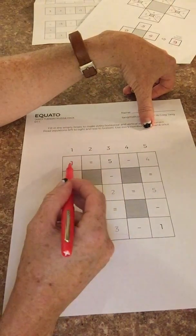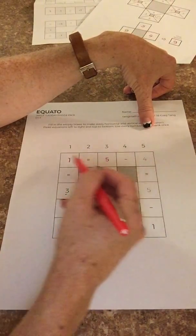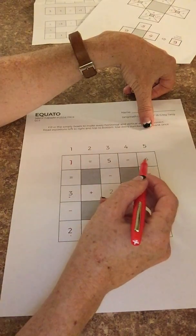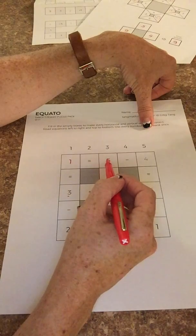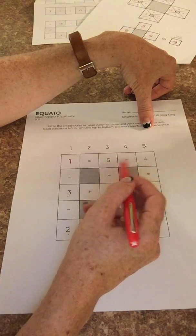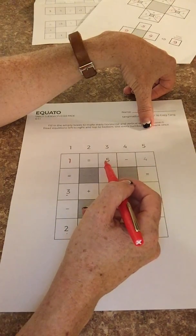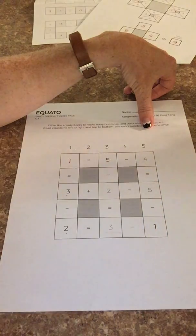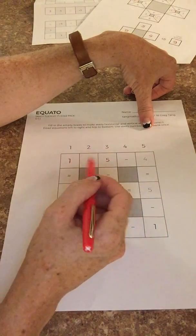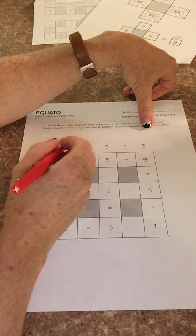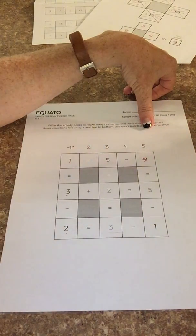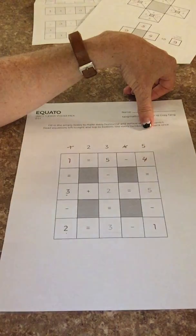So then what's happened now is this equation going across now would only have one empty space. So we have one equals five minus four. So we want the kids to think five minus what number gets me to one. So they can count backwards, they can start at one and count up and should come up with four. And they should be crossing those off as they use them because we're only using each number in the bank once.